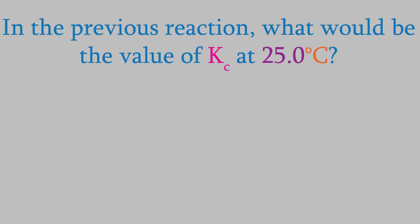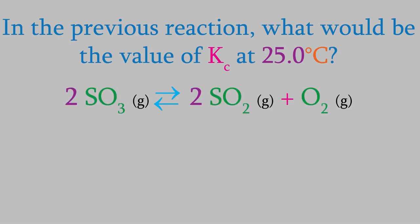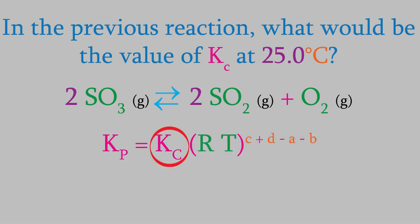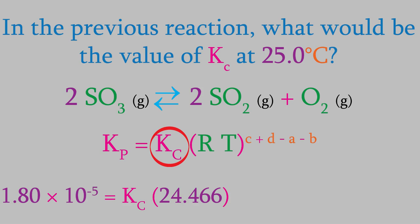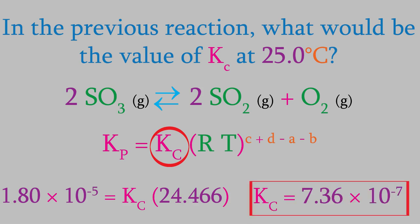For example, in the previous problem we calculated the equilibrium constant using pressures. What would be the value of Kc at 25.0 degrees Celsius? We plug in Kp = 1.80 × 10⁻⁵ and a temperature of 298.15 K. The exponent will be all the product coefficients minus all the reactant coefficients, so that's 2 + 1 − 2 for a total exponent of 1. That gives us 24.466 in the parentheses on the right side. When we solve for Kc, we get 7.36 × 10⁻⁷. Notice that that's significantly different from the Kp we got.